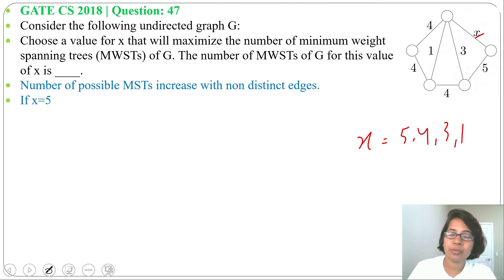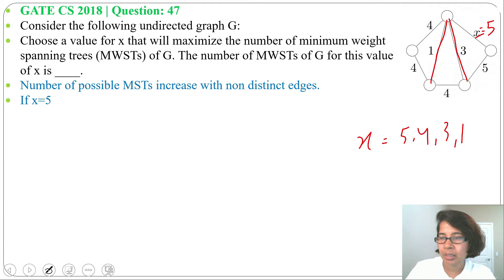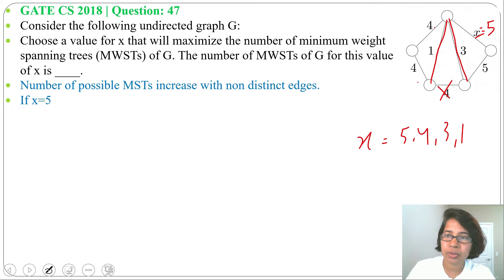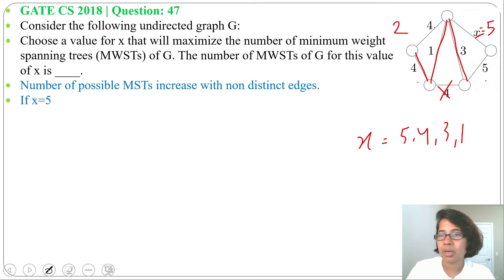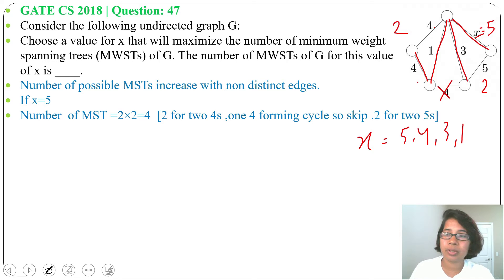When x equals 5, in the minimum spanning tree we first choose weight 1, next we choose 3, we skip the 4 that creates a cycle. Next, from the two edges of weight 4, we can choose either one — that gives two options. Then from the two edges of weight 5, we can choose either one — that gives two more options. So 2 multiplied by 2 gives 4 total options.